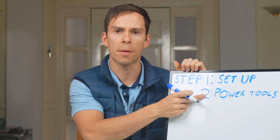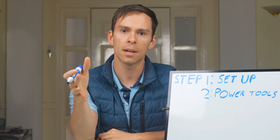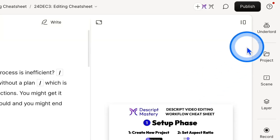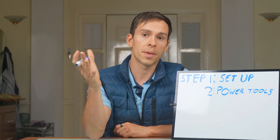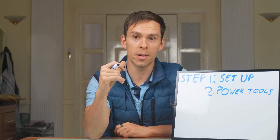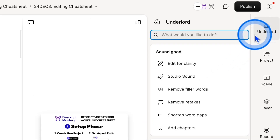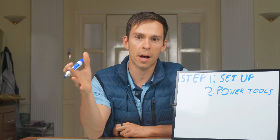Step two is what I call the Power Tools phase. One of the things that makes Descript so fast and easy is all the AI tools built into it. These AI tools do things that used to take hours but can now be done with the click of a few buttons. Start by coming up to Underlord — that's all of Descript's AI features. Instead of being an AI overlord, the Underlord is here to serve you, not the other way around. Everything on this list under Underlord is an AI tool that will speed up your edits, but I'm going to show you just three that I use most often.